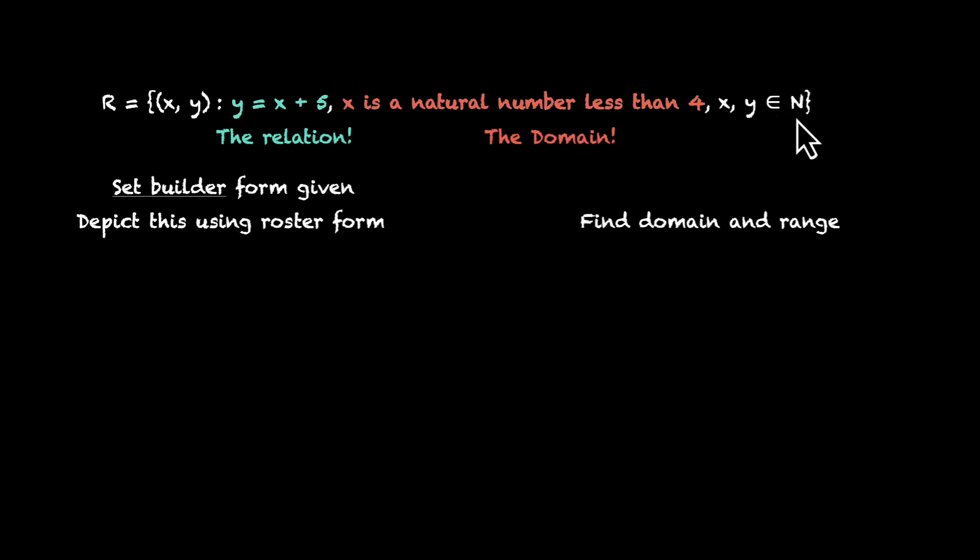And what about y belongs to natural numbers? Well, that's going to be the co-domain. So what are domain and co-domain? The natural numbers that are less than four, that's one, two, and three. There are only three natural numbers that are less than four. And the co-domain is basically the entire set that's allowed. That's y belongs to natural numbers, that's going to be one, two, three, four, and so on. That's our co-domain.